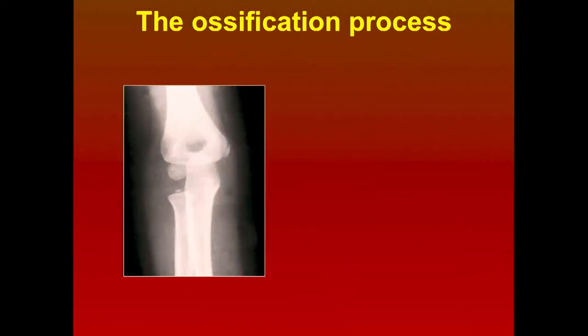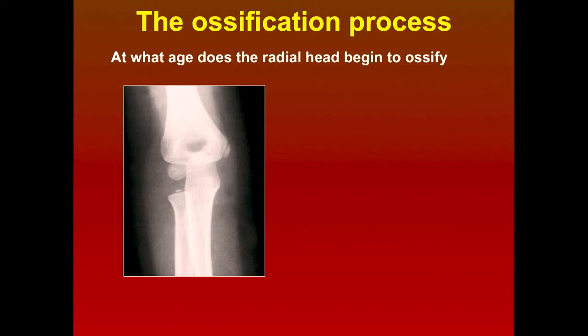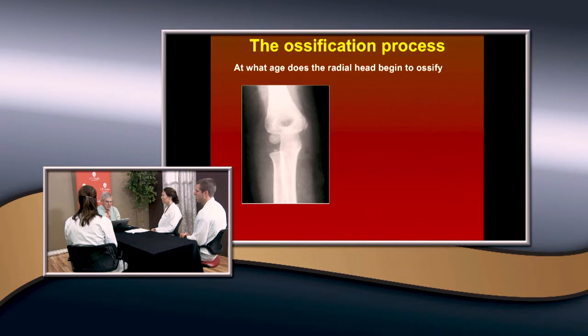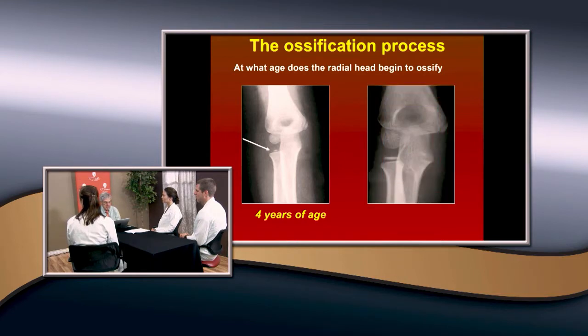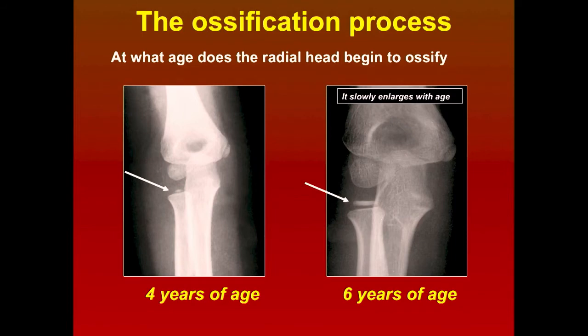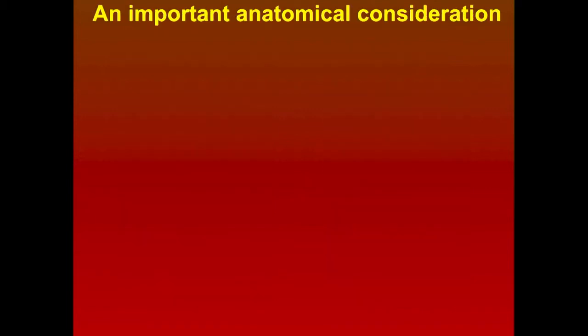The radial head begins to ossify at about three or four years of age. Here's one patient who was four years of age. That ossification goes up to about six or seven years of age before it's fully ossified. Sometimes there's a bipartite ossification center, and I'll show you in a few minutes how that can lead you astray.